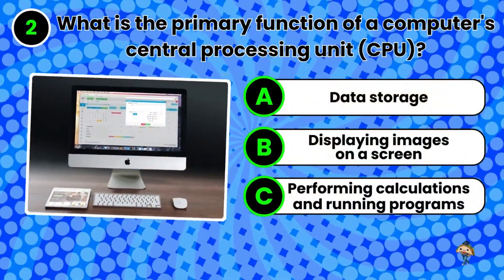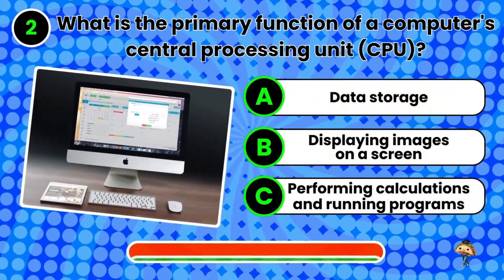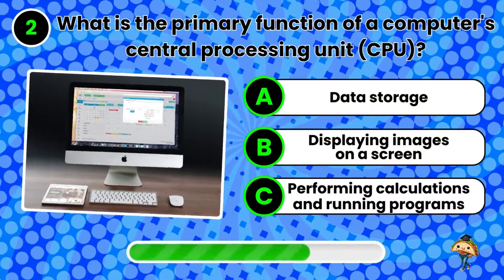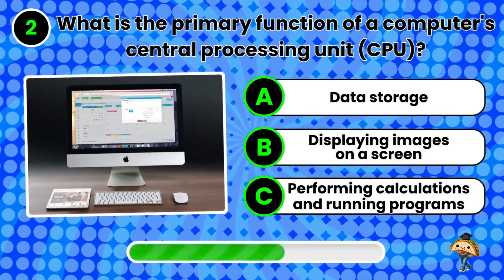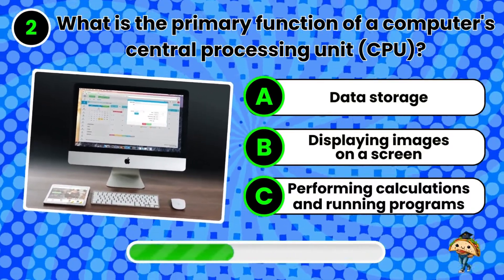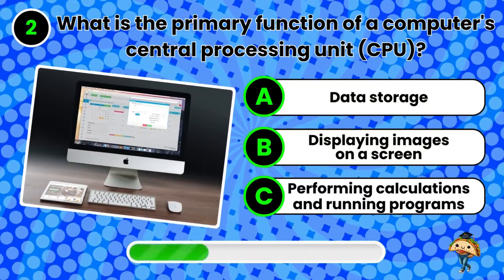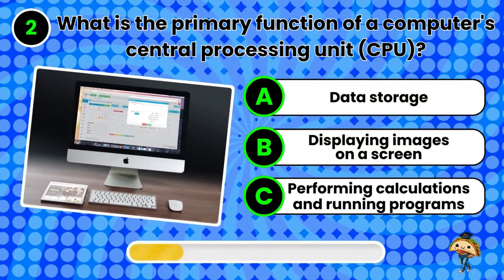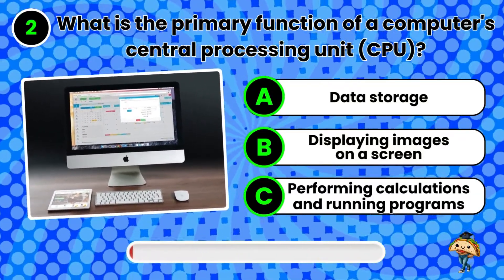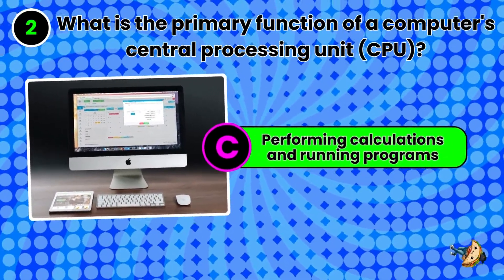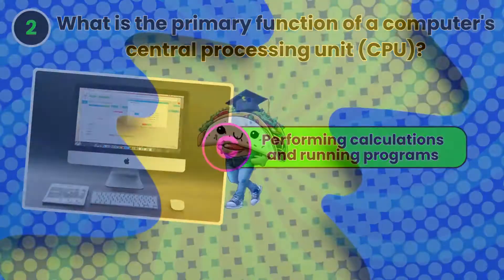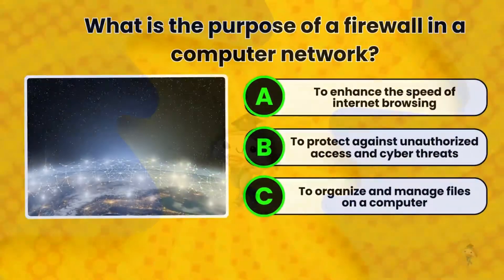Question 2. What's the primary function of a computer's central processing unit, or CPU? Performing calculations and running programs. That's right. Next question.